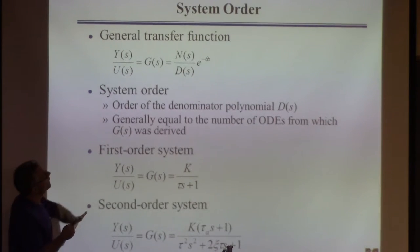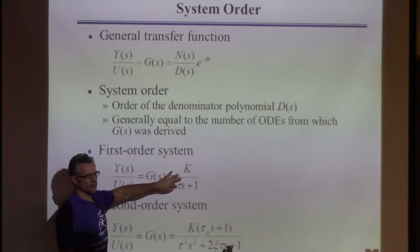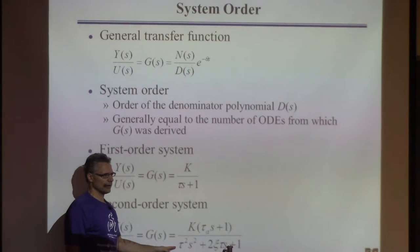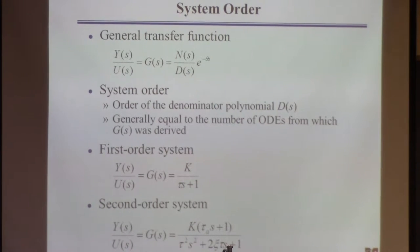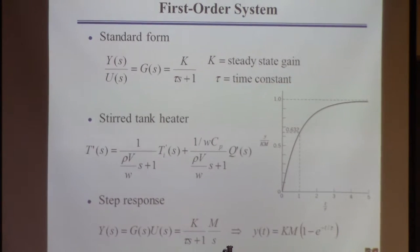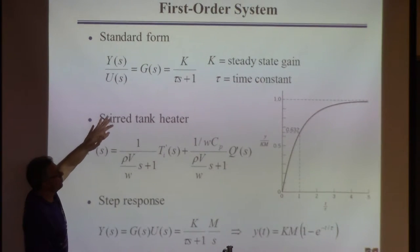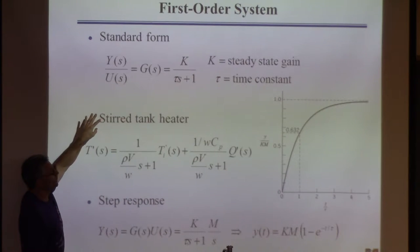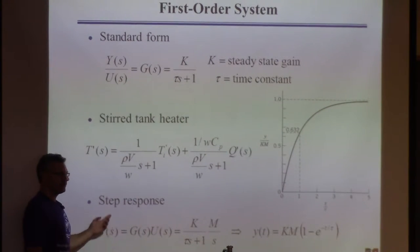We'll write all first-order systems in the form K over (tau s + 1). K is the steady-state gain and tau is the time constant. I'm going to derive what the response of any first-order system is to an input change of any magnitude. Once you know this answer, all you have to do is know what K and tau are for your problem, and you can use the answer directly.